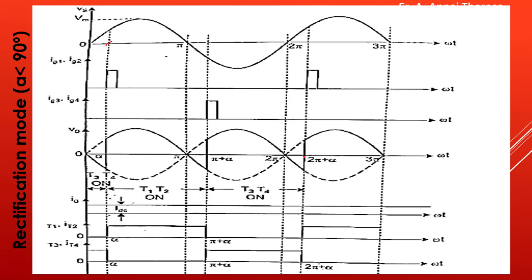This reversal of voltage is due to the inductance effect. When T1 and T2 are conducting, this is the output. When T3 and T4 are conducting, this is the output. This is the continuous load current. The current IT1 and IT2 represents the current flow through thyristors T1 and T2 — whenever T1 and T2 are in conduction mode, there is a current flow. T1 and T2 conduct from alpha to pi plus alpha, and you draw the waveform for that duration.